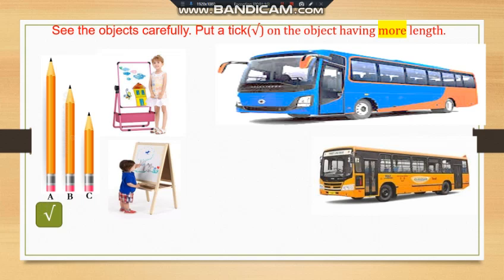And in the 2 buses, compare the buses — yellow color and blue color. Blue color bus is having more length, and yellow color bus is short length. And see the 2 students, Sweetie and Madhur. Sweetie has more length — that is, the height of Sweetie is more as compared to Madhur.